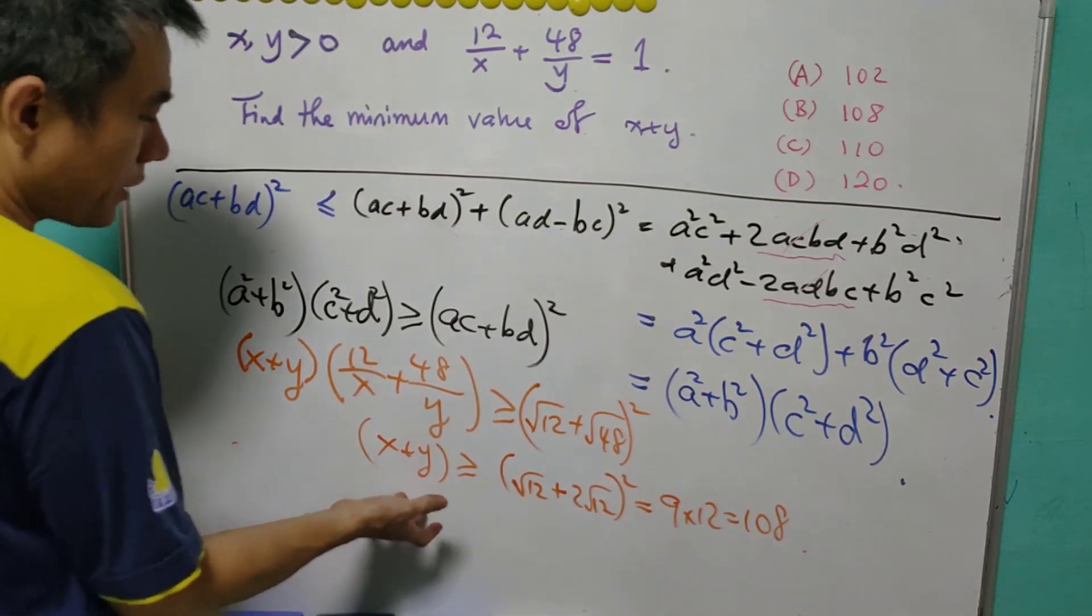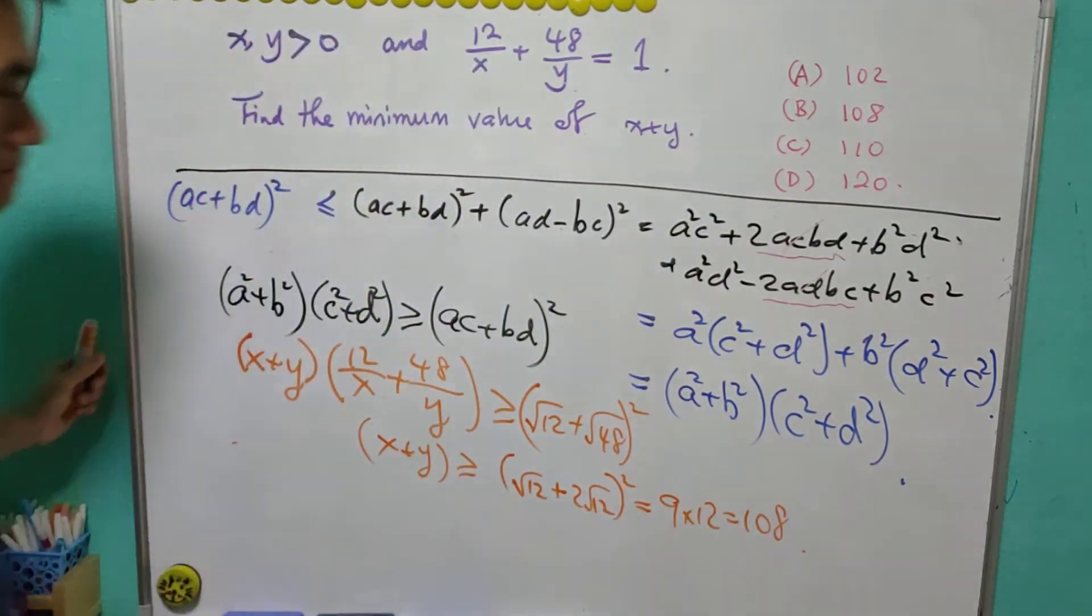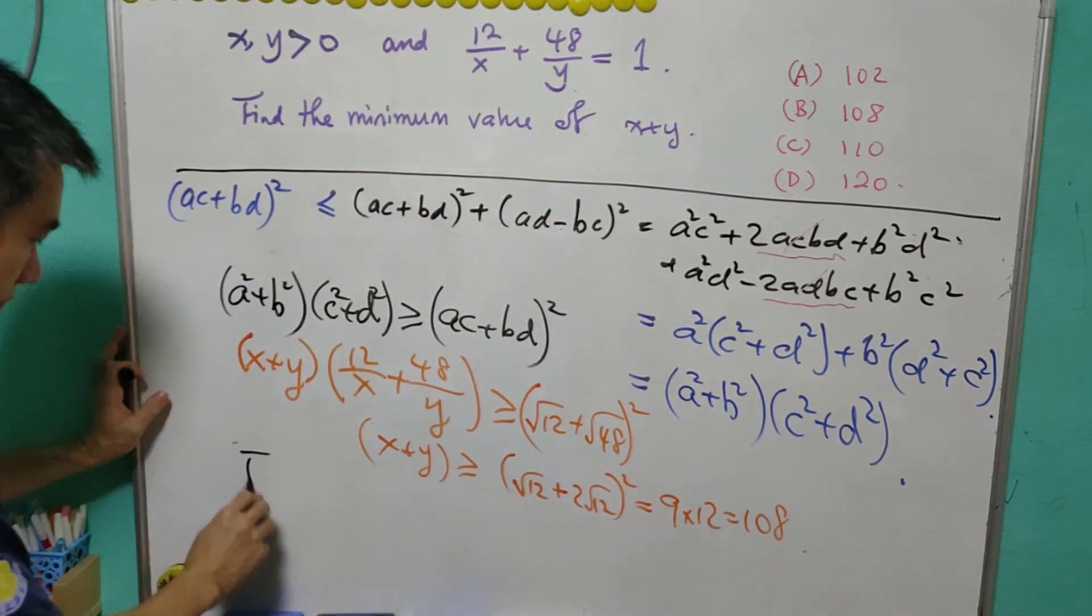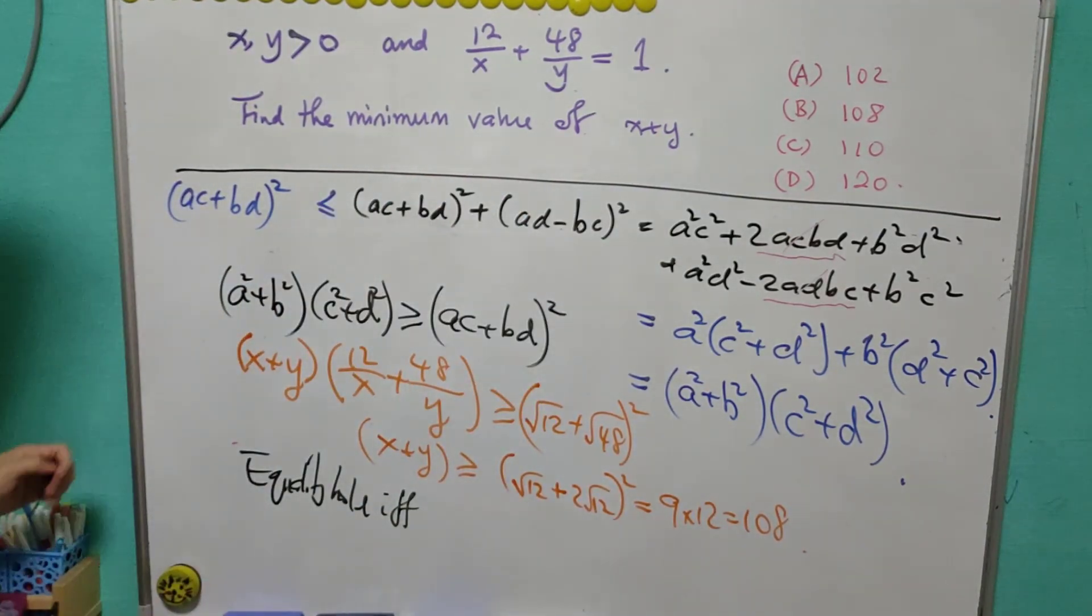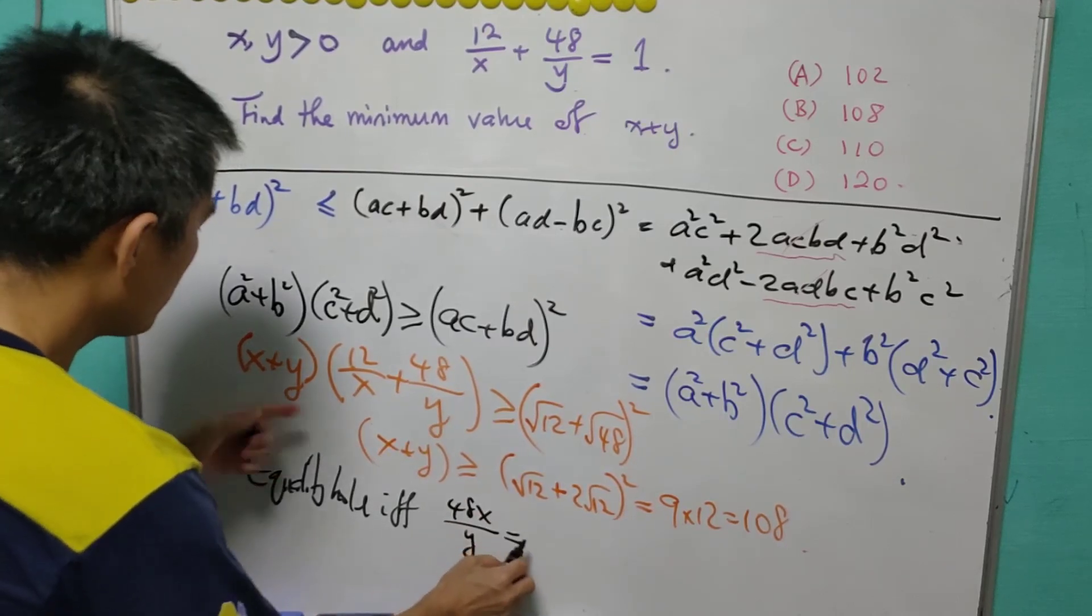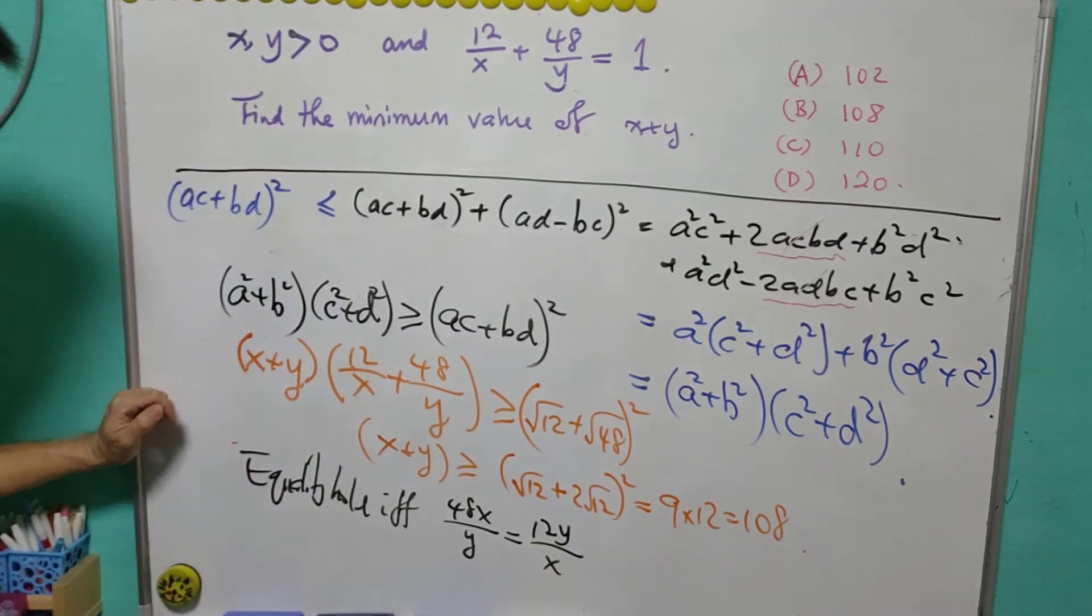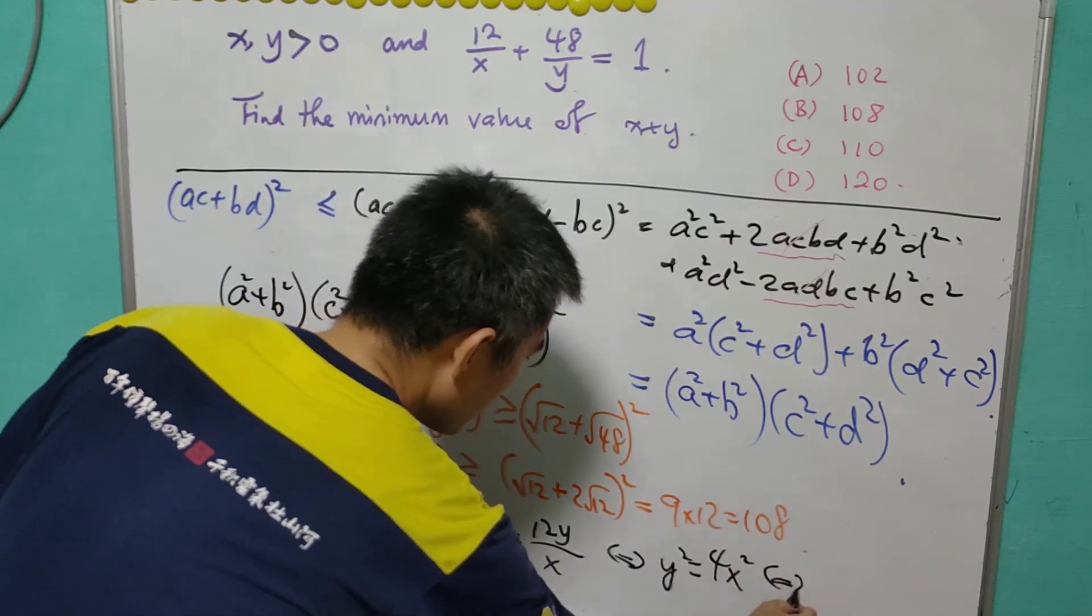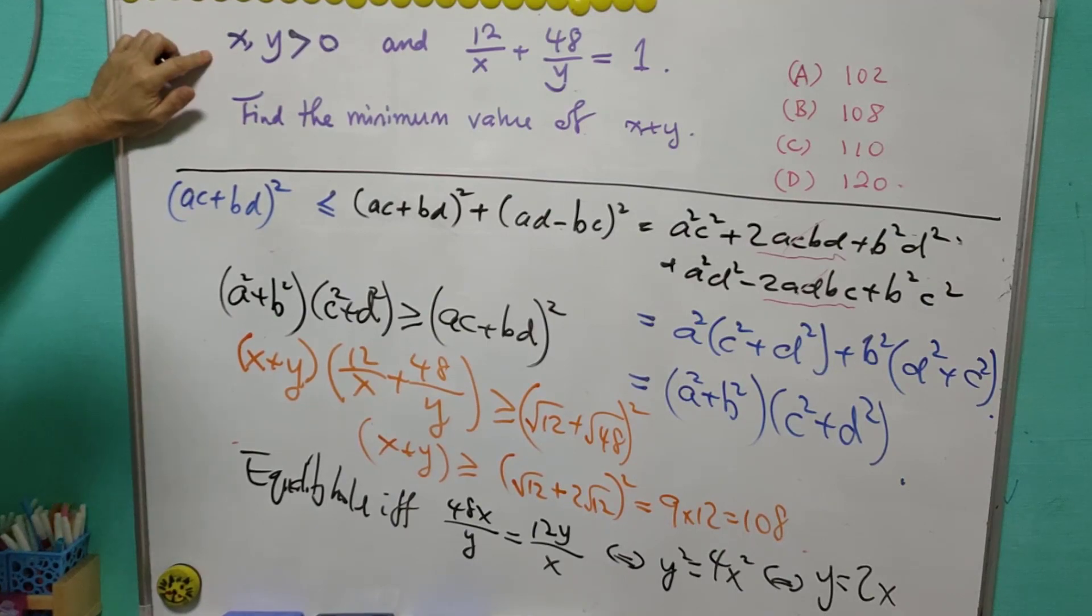So for now we have x + y ≥ 108. And we need to make sure that the equality holds. Back to this one, equality holds if and only if ad - bc = 0. So ad will be 48x/y equals to bc, that is 12y/x. This will mean that y² = 4x². And this will mean that y = 2x because both x and y are positive.